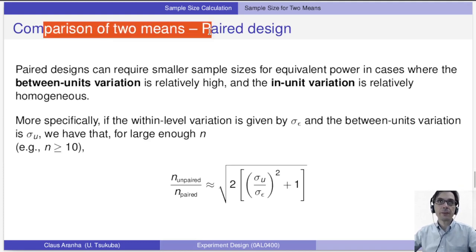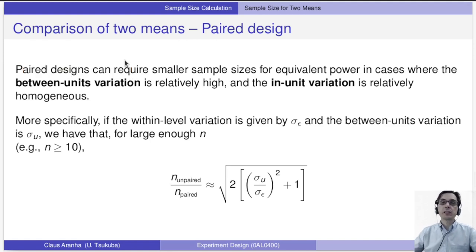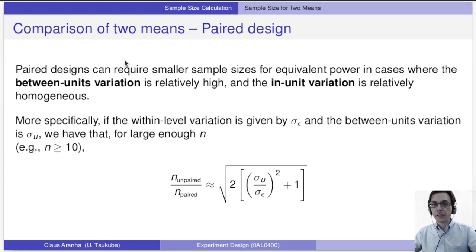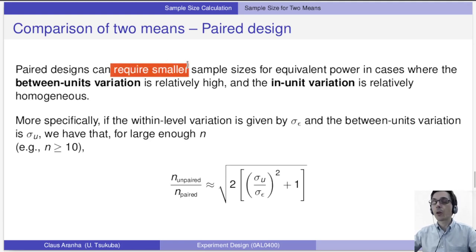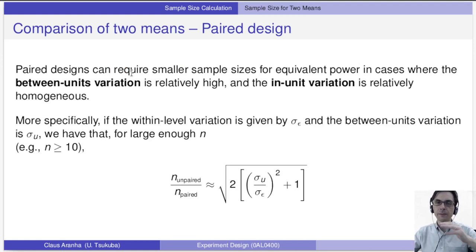Now, what if we have a paired design — a comparison of two means under a paired design? Paired designs, as we discussed before, have higher power and confidence than a regular two-sample comparison. This means they can usually use smaller sample sizes for equivalent power, especially when the variation between units is relatively high, as in the example from lecture number four.